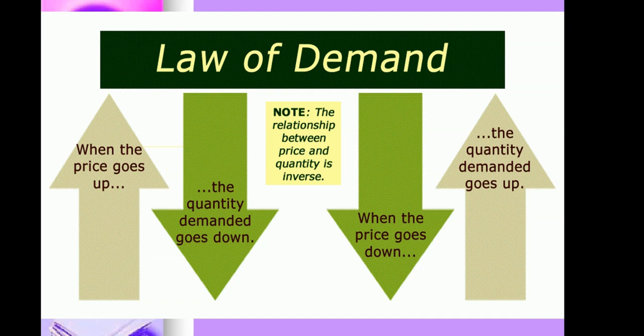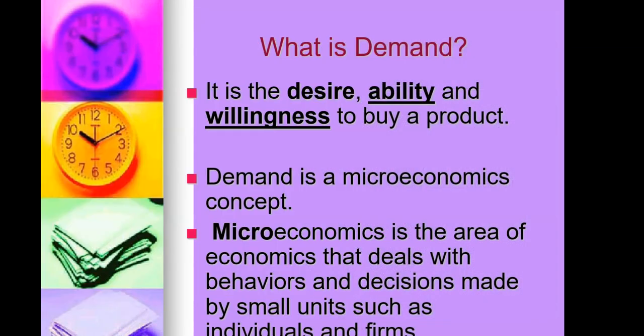If you see here on the left-hand side of the image, the law of demand: when the prices go up, the quantity demanded goes down. You'll notice the relationship between price and quantity is inverse. When the prices go down, the quantity demanded actually goes up.